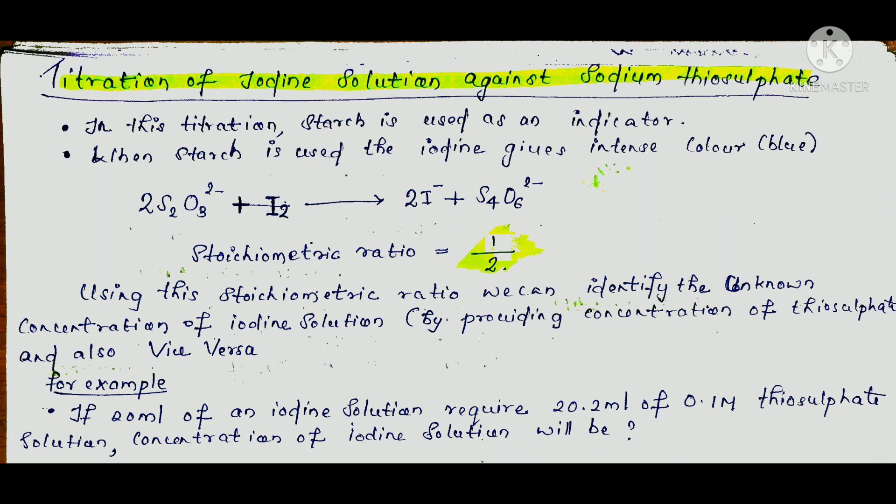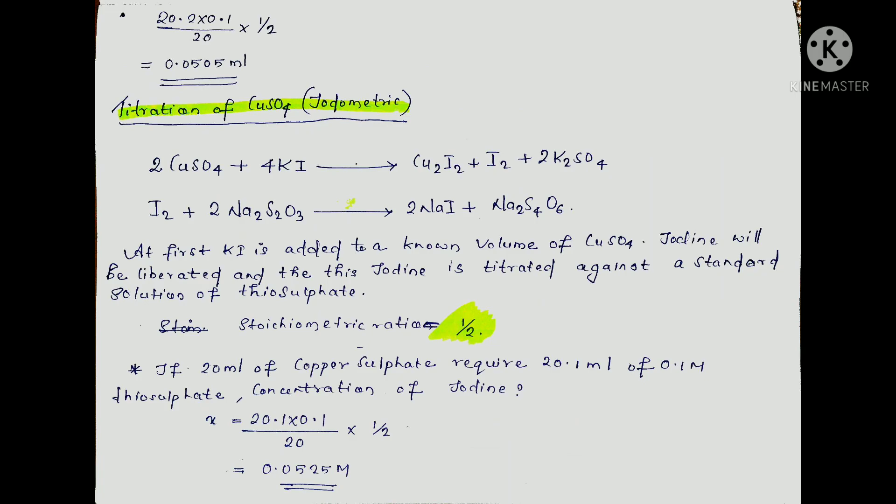The calculation is: volume of oxidizing agent times concentration of oxidizing agent equals volume of reducing agent times concentration of reducing agent times stoichiometric ratio. So, x equals 20.2 × 0.1 divided by 20 × (1/2).